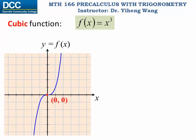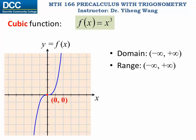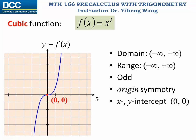Then we have the cubic function f(x) equals x to the third power. This function has a domain that includes all real numbers, and its range also includes all real numbers. It is an odd function because it is symmetric about the origin. It has the same x and y-intercept, (0, 0), the origin. And this function is always increasing.